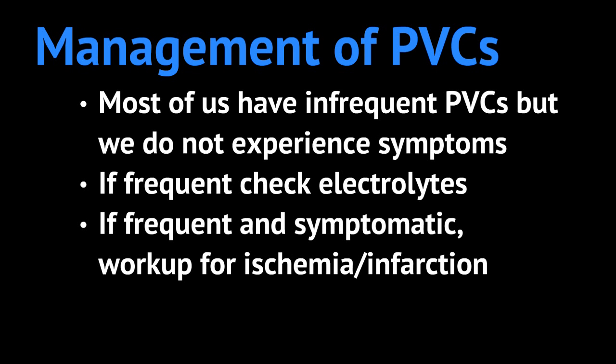If a patient is having frequent PVCs, has a cardiac history, and is also symptomatic — such as chest pain, pressure, or shortness of breath — you want to do a workup for ischemia or infarction, such as obtaining an EKG and getting troponins.